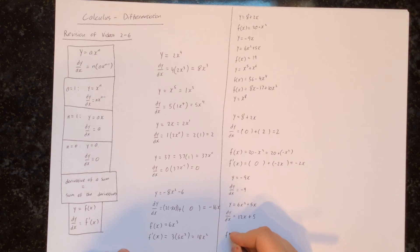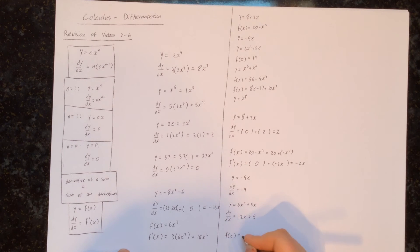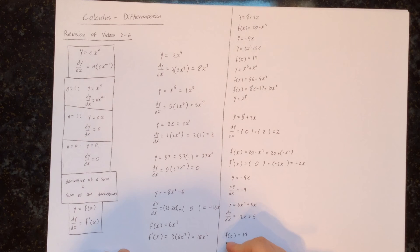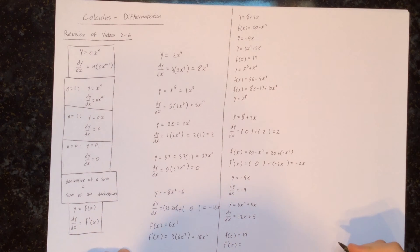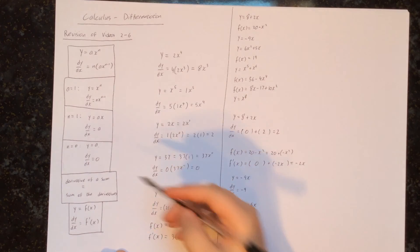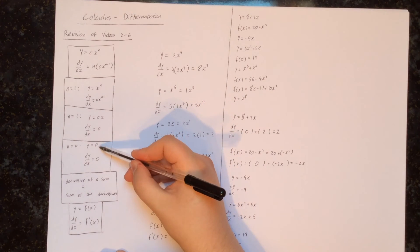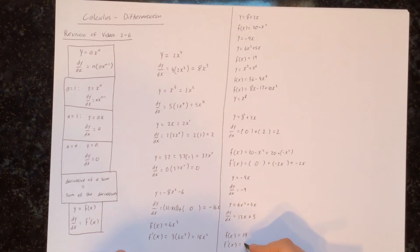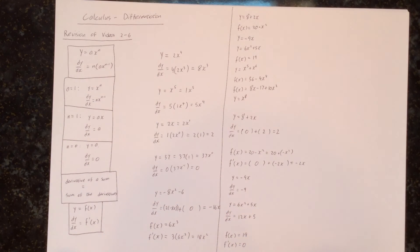Next, f of x equals 19. Since 19 is just a number, the derivative of any number is 0, so f dash of x equals 0.